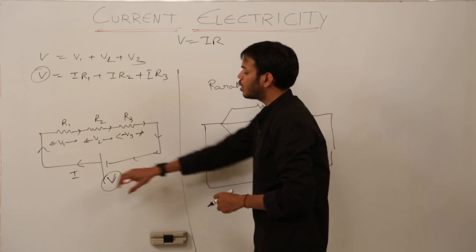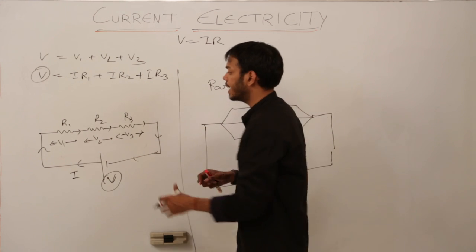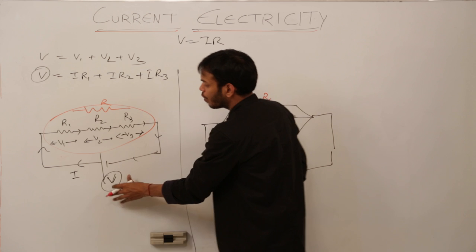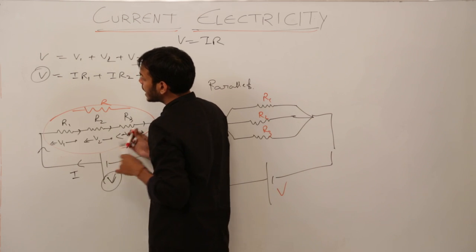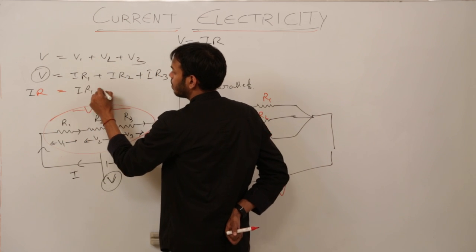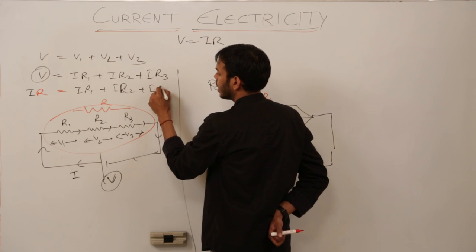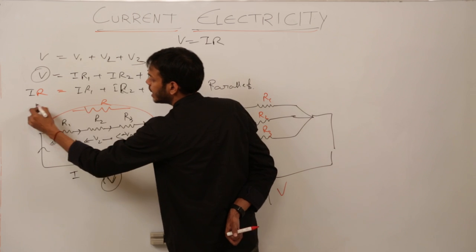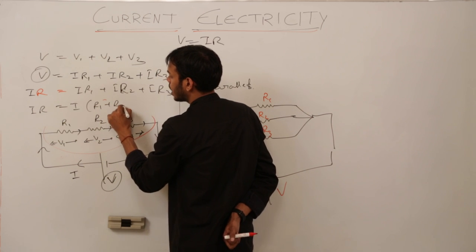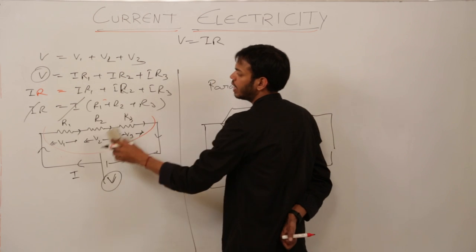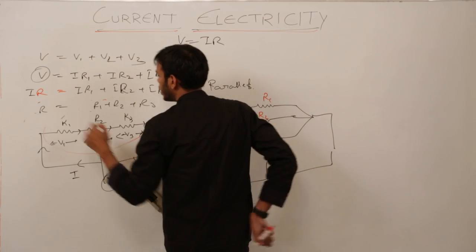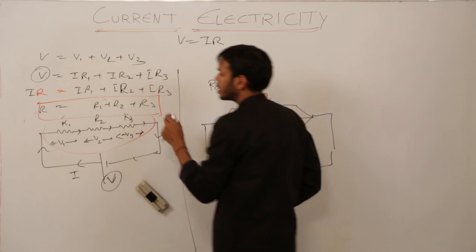V is the total voltage given to the whole circuit. If R is the total resistance of the circuit or combination, V equals total current times total resistance R. So I·R = I·R1 + I·R2 + I·R3. Cancel out I — you are left with net resistance equal to R1 plus R2 plus R3 for a series circuit. So this is the formula for resistors in series.